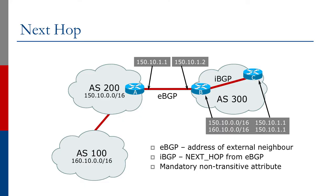Next hop is a mandatory attribute — you have to have an IP address of the next router. If you don't have an IP address, you can't get to that destination. However, the attribute is non-transitive; it's not passed from autonomous system to autonomous system. The next hop is set as the prefix enters the autonomous system.